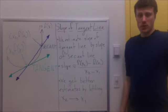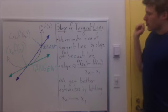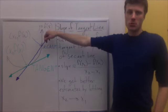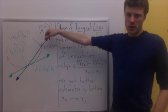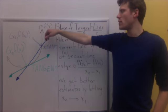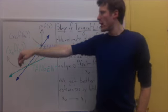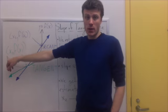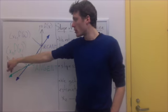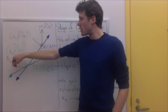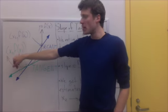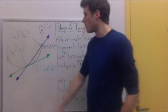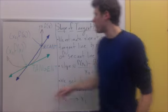Now let's talk about the geometric picture. We're starting with a curve, y is equal to f of x — a curve given by a function in the x, y plane. We have some point on the curve. We can specify it just by an x-coordinate, which we're going to call x1. Its y-coordinate is the value of the function at x1, f of x1.